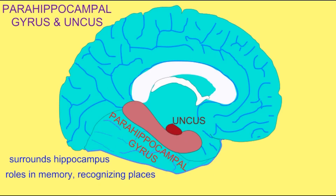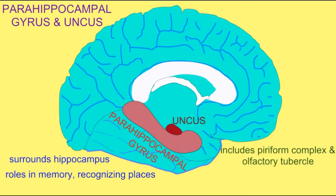Next to the parahippocampal gyrus is the uncus, which includes the piriform complex and the olfactory tubercle, and thus it has roles in olfaction, but also in emotions, so it is part of the limbic system.